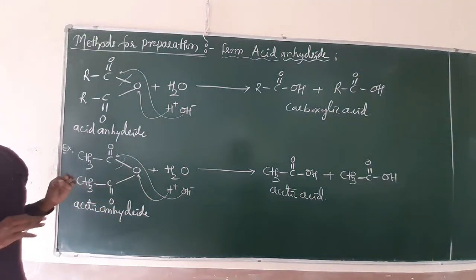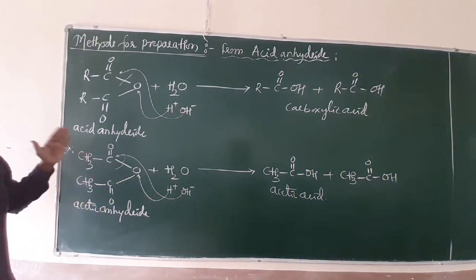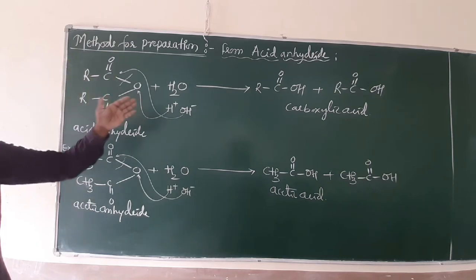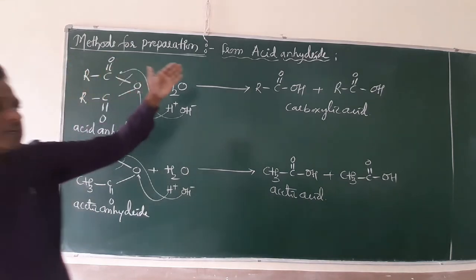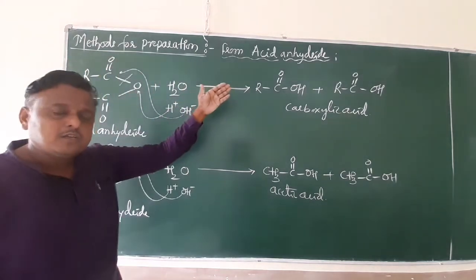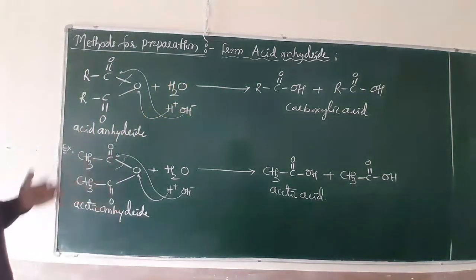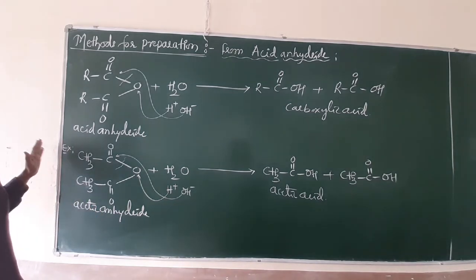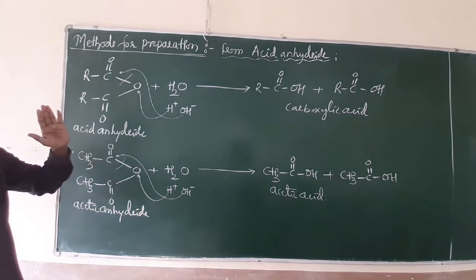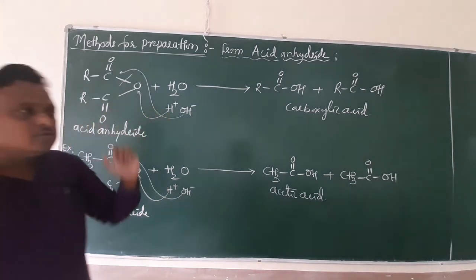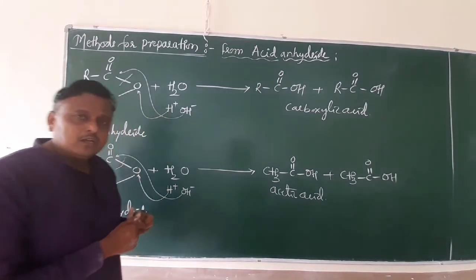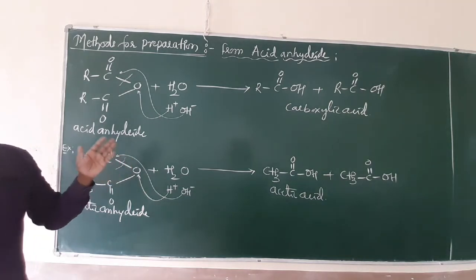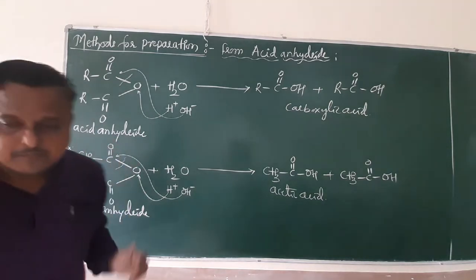It is a very simple concept — just add water and the reaction produces carboxylic acid in both cases. Keep practicing with different examples of acid chloride and acid anhydride. We continue with the next video on the physical properties of carboxylic acids. Thank you so much.